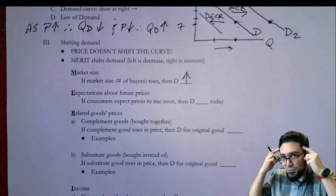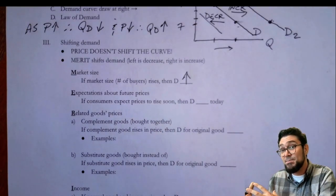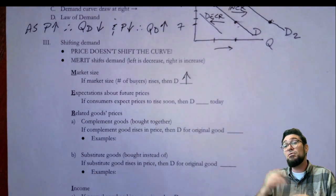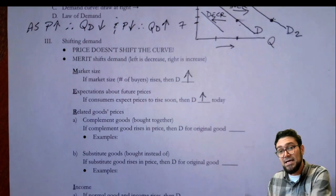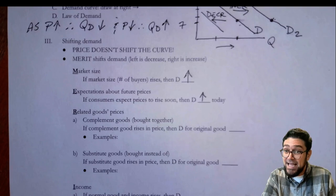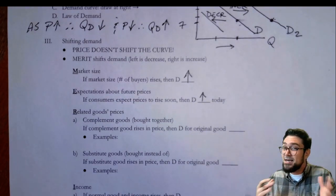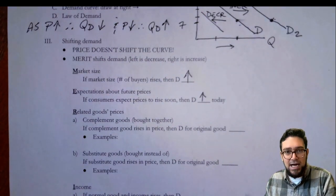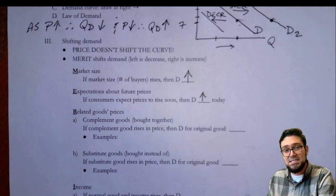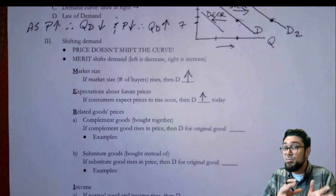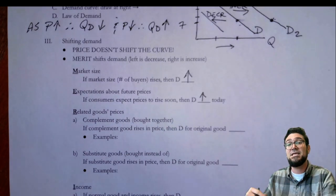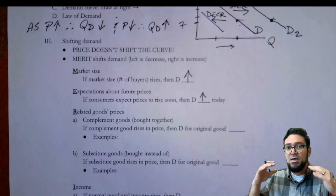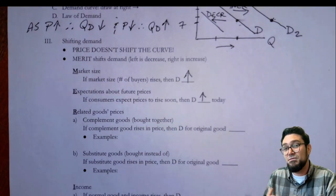The second shifter is expectations about future prices. If consumers expect prices to go up soon, they'll buy now — at least for goods that don't expire — to avoid that higher price. So expectations of higher future prices will cause demand to rise today. But if people believe prices will fall soon, demand will fall today. A good example: very few people buy flat screen TVs in October because everybody knows that on Black Friday in the United States, lots of TVs go on sale. Demand falls in October in the expectation of a sale. This happens all the time — if consumers hear news reports that prices are rising for a product, they'll often run out to buy it right away.